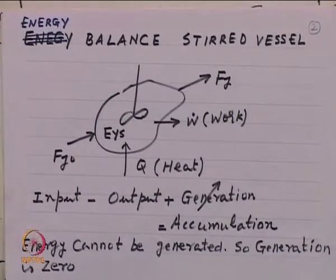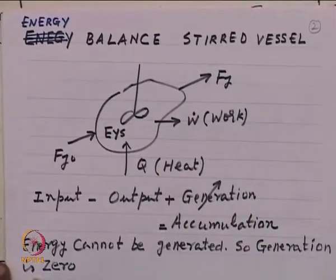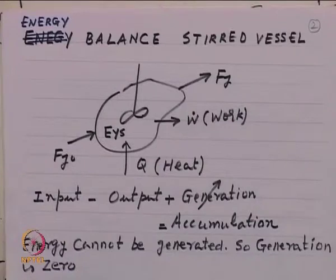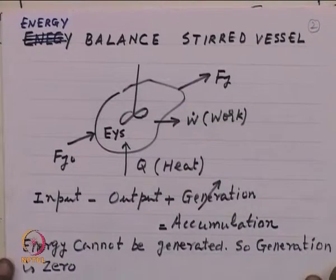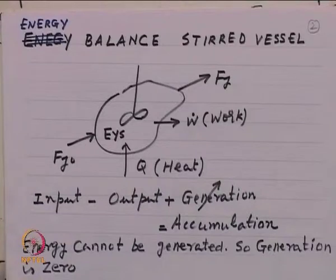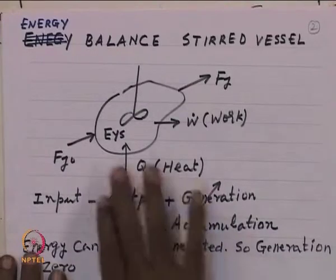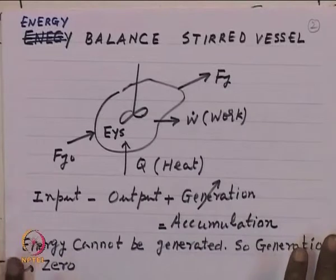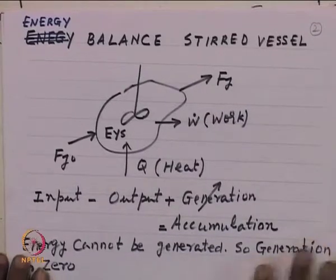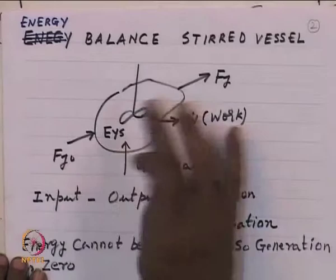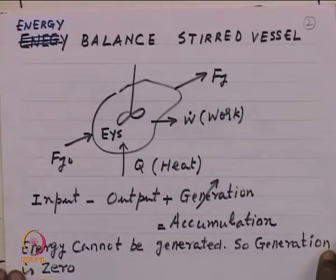We write our energy balance for a vessel of our interest. I have deliberately taken a vessel of a very crooked shape to indicate that the balances we write can take into account any shape in principle. We have here a stirred equipment — by stirred, we mean that the intensive properties of the system at different positions are the same, so that temperature and compositions are uniform everywhere.